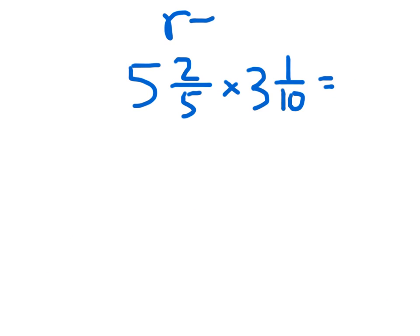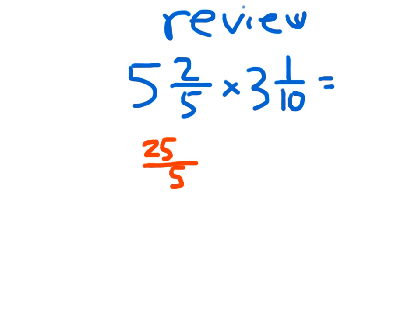We have 5 and 2 fifths times 3 and 1 tenth. We have to write each of those mixed numbers as improper fractions. The denominator is going to be 5, because we're talking about fifths. 5 wholes is worth 25 fifths, and we add that 2 to get 27 fifths. So 5 and 2 fifths is equal to 27 fifths.